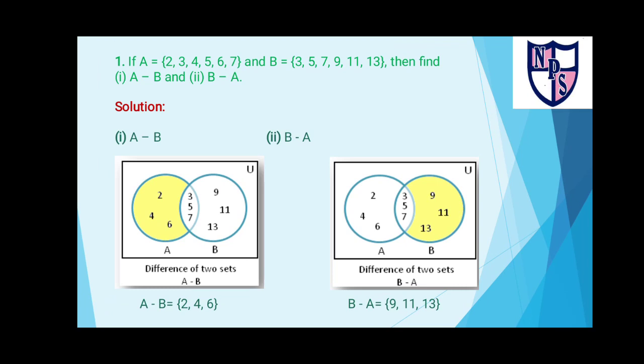Similarly for B minus A, the shaded part of circle B shows the remaining elements of B which do not belong to set A. So the answer is the elements written in the shaded area.